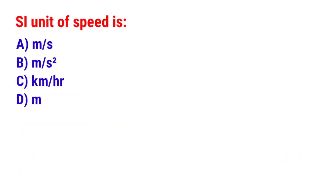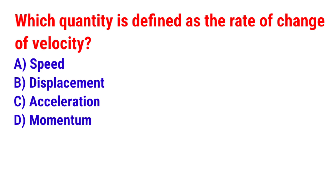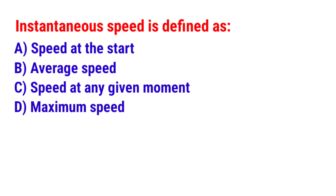Next question: SI unit of speed is? The answer is option A — Meter per second. Next question: Which quantity is defined as the ratio of change of velocity? The answer is option C — Acceleration. Next question: Instantaneous speed is defined as? The answer is option C — Speed at any given moment.